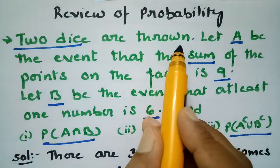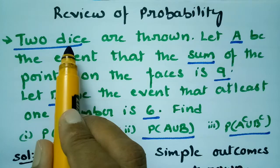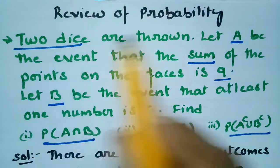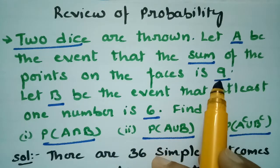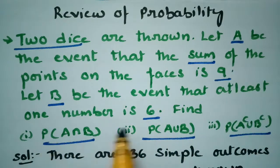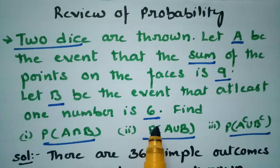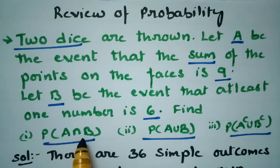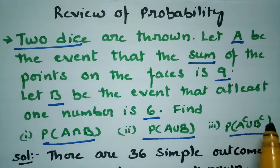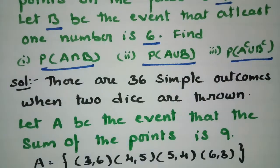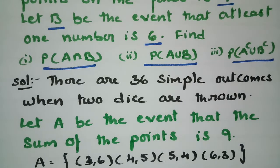It is clear that two dice are thrown, so the total outcomes are 6 into 6 = 36. Let A be the event that the sum of the points on the faces is 9, and let B be the event that at least one number on the die is 6 — at least one 6 means we can even get two sixes. There are 36 outcomes when two dice are thrown.